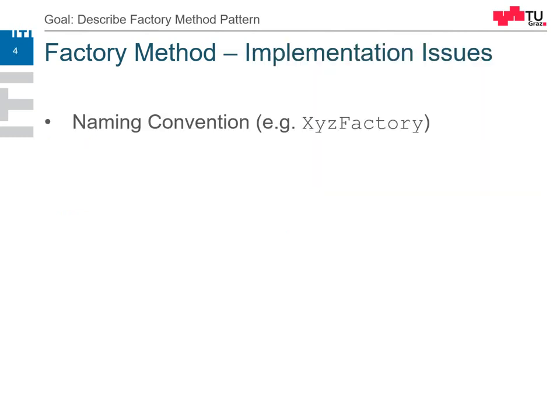So what are the issues here? First of all, the naming convention. Sometimes it's already defined, but how should we name our factory method so that the intent is clear? For example, we could call it just object factory, or xyz factory, or some name with the sub-name factory.